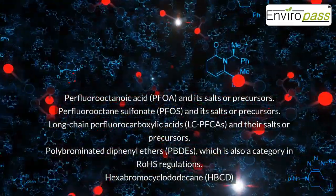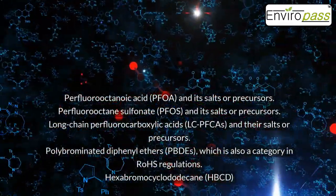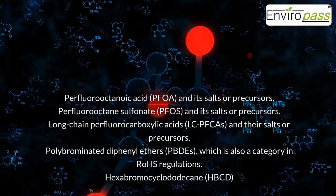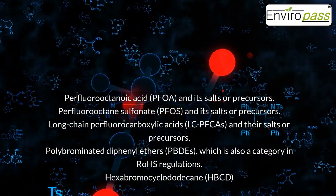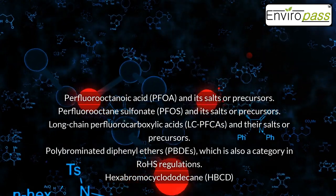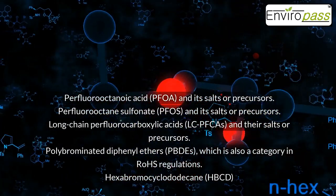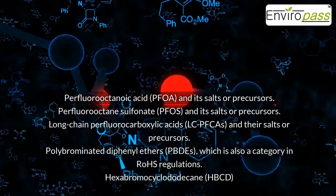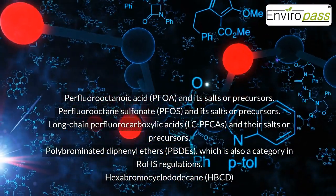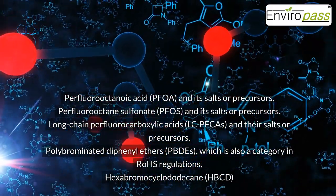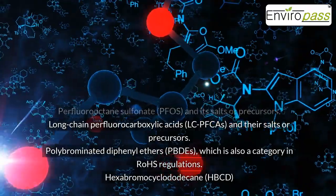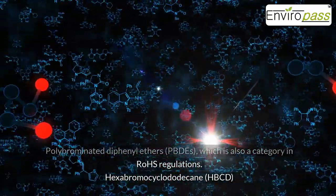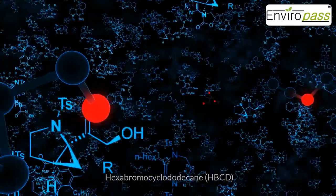Perfluorooctanoic acid (PFOA) and its salts or precursors. Perfluorooctane sulfonate (PFAS) and its salts or precursors. Long-chain perfluorocarboxylic acids (LCPFCAs) and their salts or precursors. Polybrominated diphenyl ethers (PBDEs), which is also a category in ROHS regulations. Hexabromocyclododecane (HBCD).